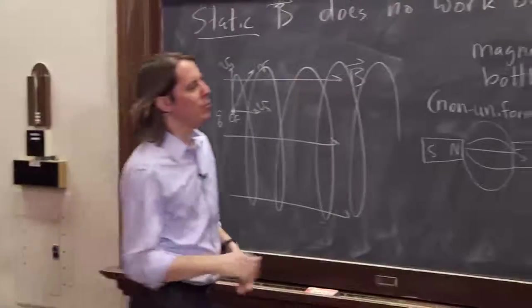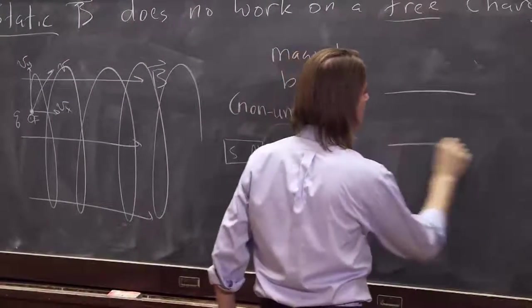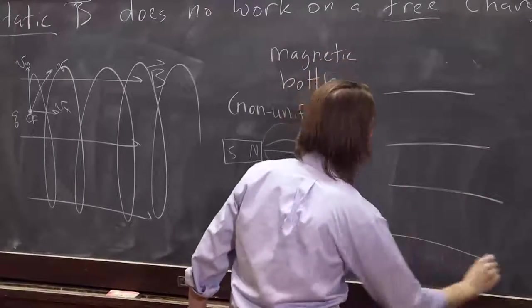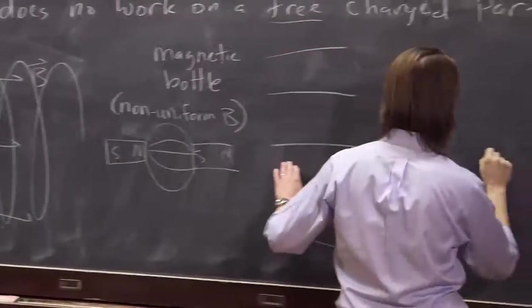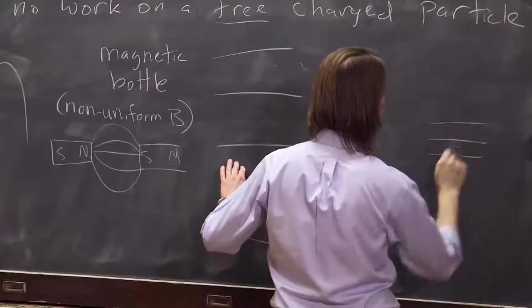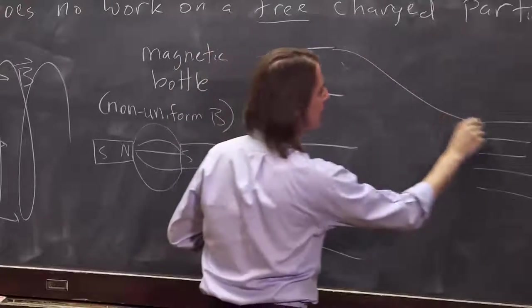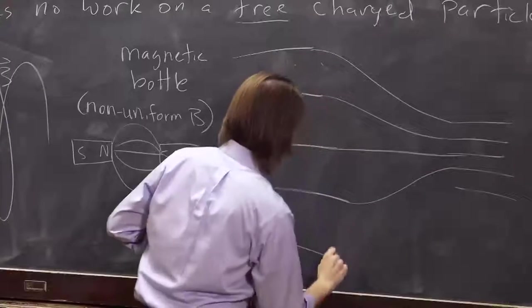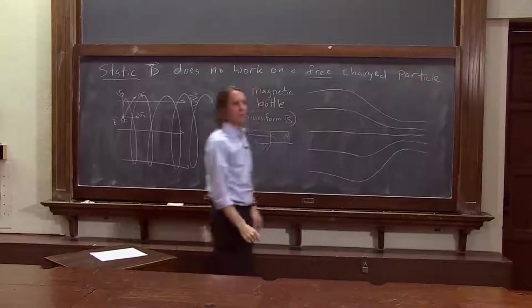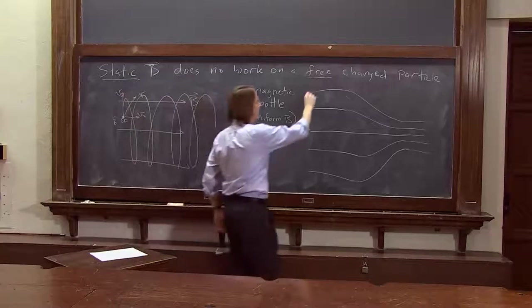So let's think about what a particle would do. Let's draw this a little bit bigger. So here are the field lines where it's far apart. And here are the field lines as they're coming together. And we'll just kind of have them do like that. So here's a more idealistic view of the non-uniform field. We could have a particle coming in. It's spiraling in. Here it comes.